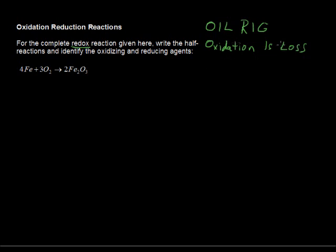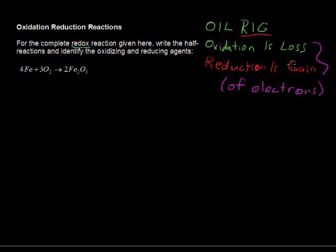And then the reduction is going to be gain, a gain of electrons. So we'll write that, R-I-G, reduction is gain of electrons. I'll finish that off for you, we've got of electrons, we'll throw that in to finish the sentence of each of those. Okay, so loss and gain of electrons.